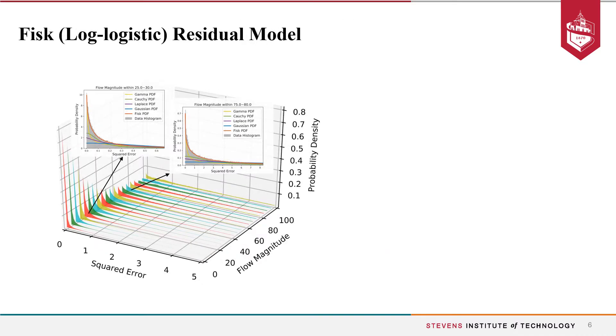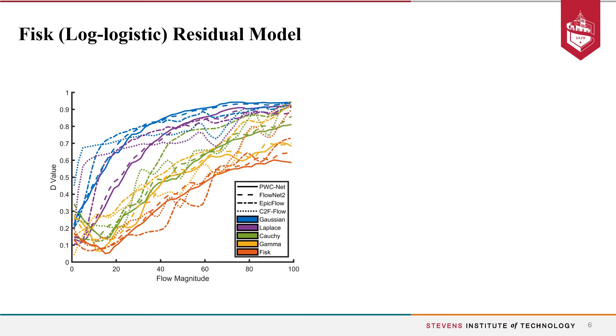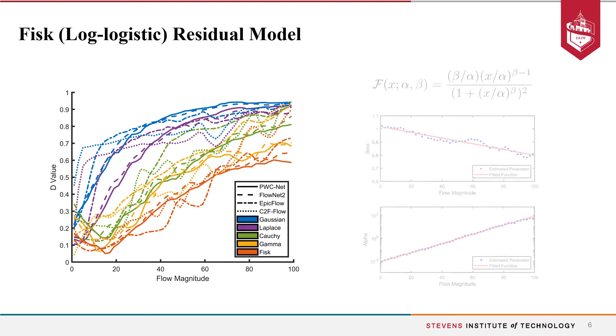The Fisk residue model is an empirically validated residue model by testing the optical flow endpoint error distribution. We explored an adaptive residue model determining the residue distribution with respect to the magnitude of optical flow observations. A thorough KS test also shows that Fisk residue model generalizes well to different optical flow estimators. Furthermore, the Fisk model parameterization is estimated with respect to the observed flow magnitude respectively with linear and log-linear regression.